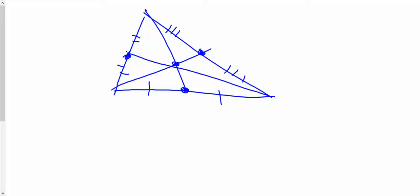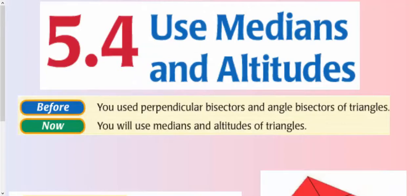They're going to meet at this point right here called the centroid. And the centroid is kind of interesting because it is the center of gravity of the triangle. So it's a new type of center again. And there's a relationship between the different parts of the medians.